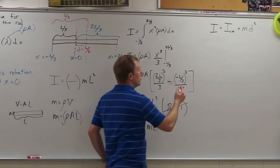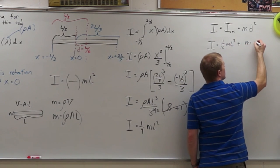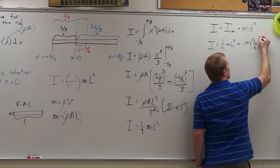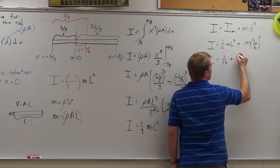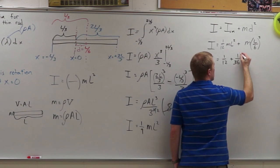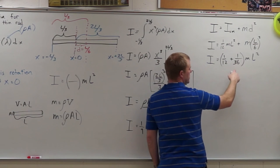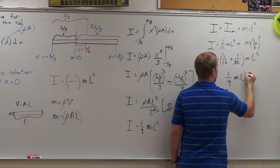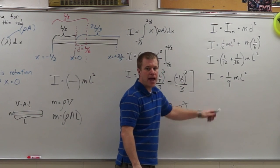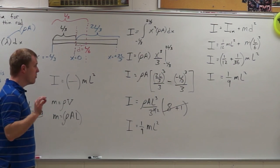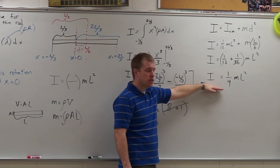Looking up the moment of inertia of a rod through its center: I equals one-twelfth mL squared. Adding md squared gives one-twelfth mL squared plus m times L over six quantity squared. Factoring out mL squared: one-twelfth plus one-thirty-sixth. One-twelfth is three-thirty-sixths, and three-thirty-sixths plus one-thirty-sixth is four-thirty-sixths, or one-ninth mL squared — the same answer. You can use integral methods or the parallel axis theorem, but use integrals if specifically asked.